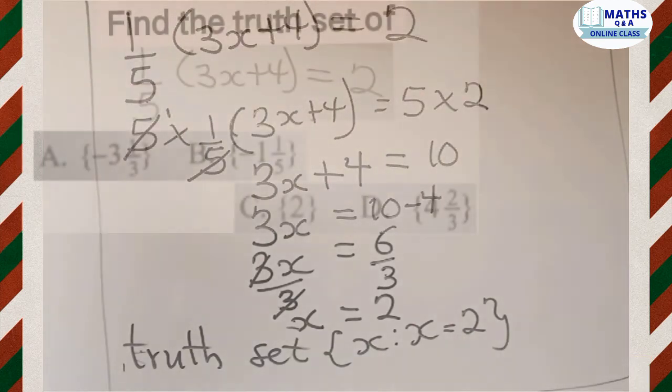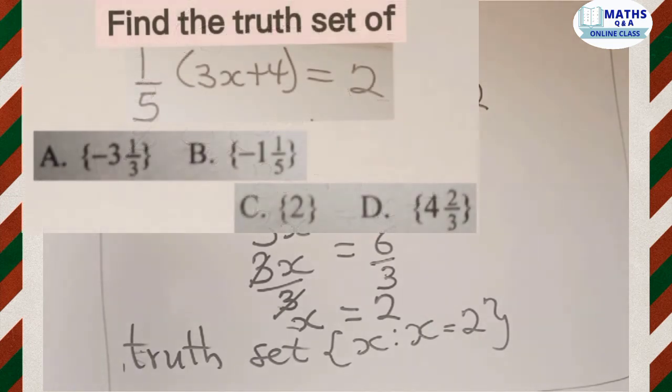Now that we've had this answer, let's compare it with the question given. We were given options A, B, C, and D. Which of them do you think is correct? The correct answer is C, that is x is equal to 2.